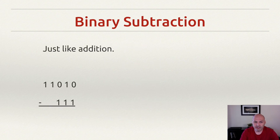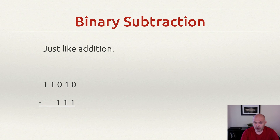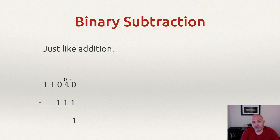Now that we know how to add, let's look at subtraction. There's really no difference — everything is exactly the same. We just have to learn the nuances of how borrowing works in a different base. Taking the first place, we're trying to subtract 1 from 0, which won't work, so we have to borrow. When you borrow in decimal you're borrowing 10. When you borrow in binary you're borrowing from the next place — in this case a value of 2. We cross off the 1 in the second place, borrow from it, and bring it over as a 2 in the 1's place.